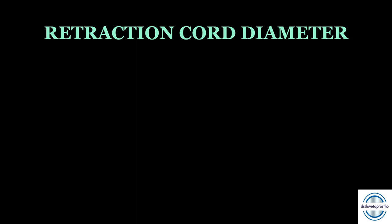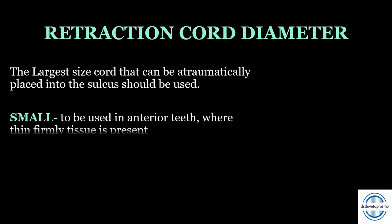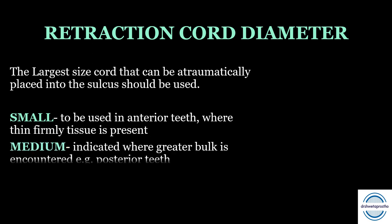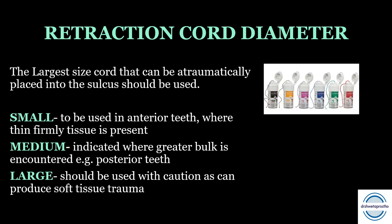The diameter of retraction cords is very important and comes in MCQs. The largest size cord that can be atraumatically placed into the sulcus should be used. Diameters are divided into three categories: small — used for anterior teeth where thin firm tissue is present; medium — indicated where greater bulk is present in posterior teeth; and large — should be used cautiously to avoid soft tissue trauma.